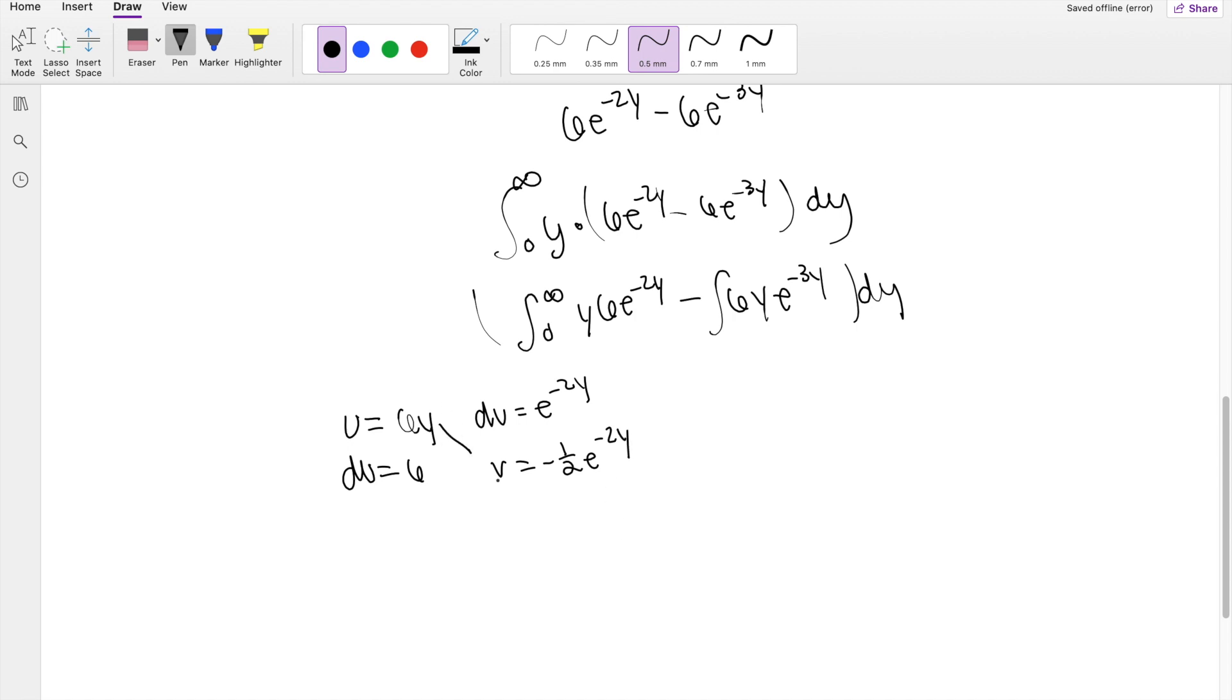So then multiplying this way, that's going to be equal to -3y e^(-2y) minus the integration of -3e^(-2y). So it's just equal to -3y e^(-2y) minus 3/2 e^(-2y).